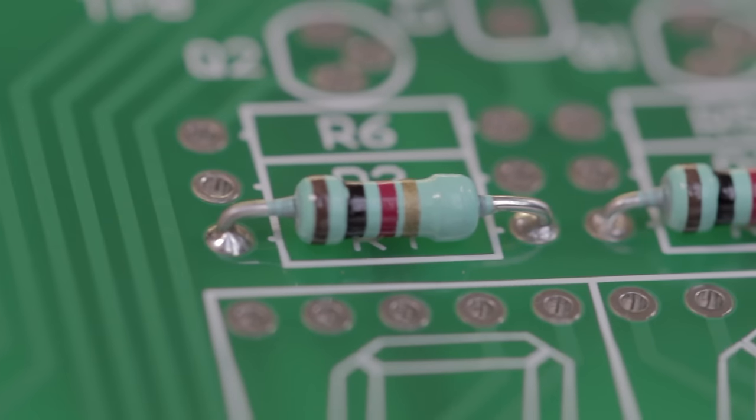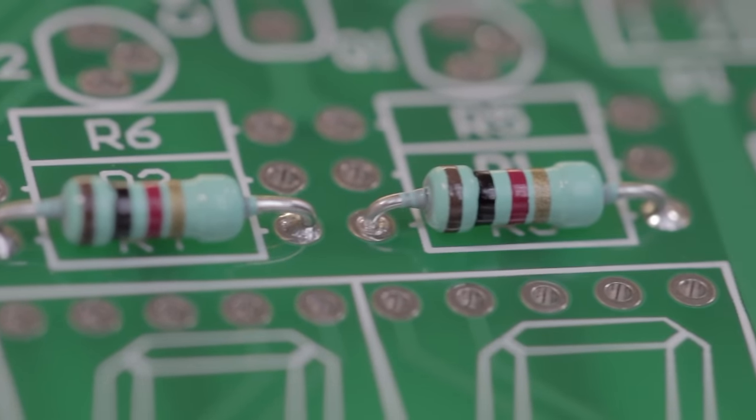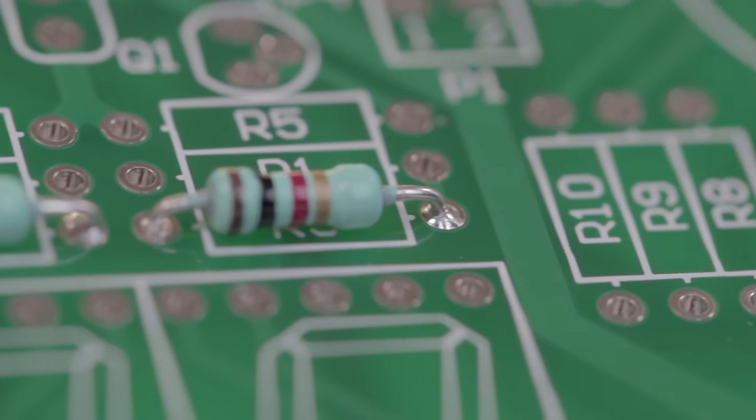When you turn the board over you should see that the solder has flowed through the hole by capillary action guaranteeing a good contact.